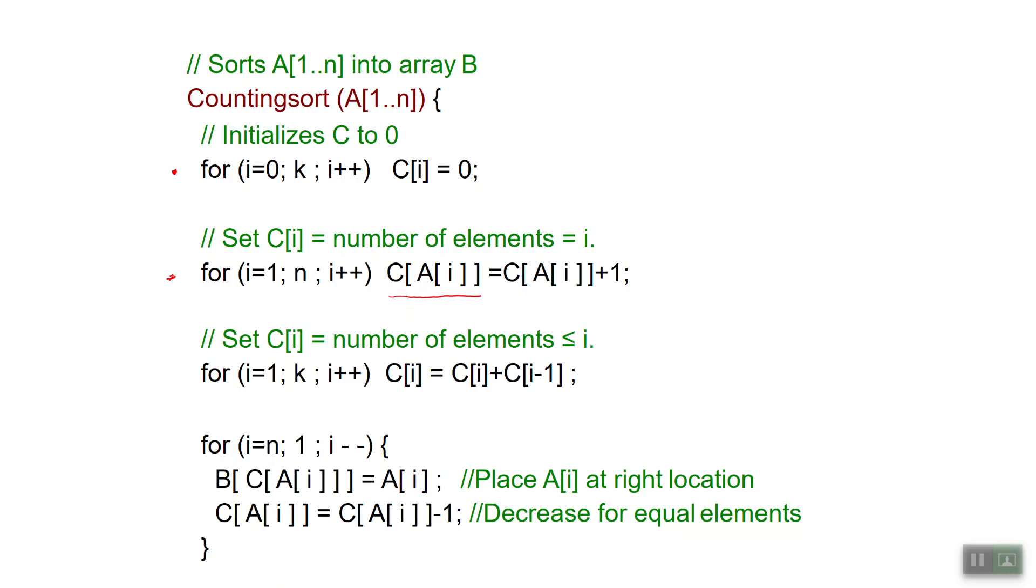Then we want C[i] to be the number of elements which are at most i in my input array A. That's done in the third loop where we keep a running sum and we iteratively set C[i] to C[i] plus C[i-1].